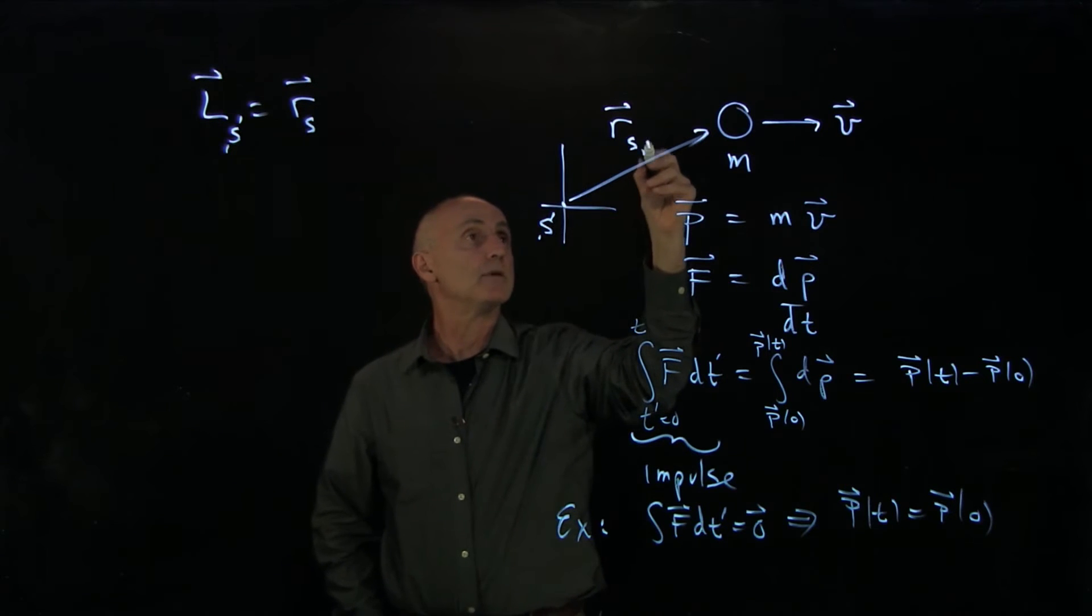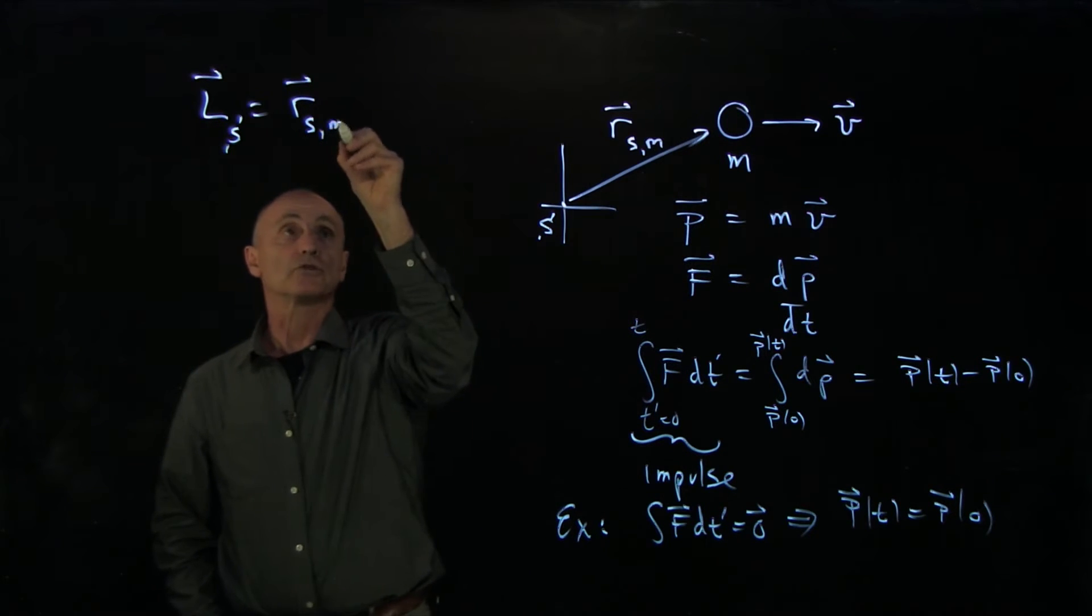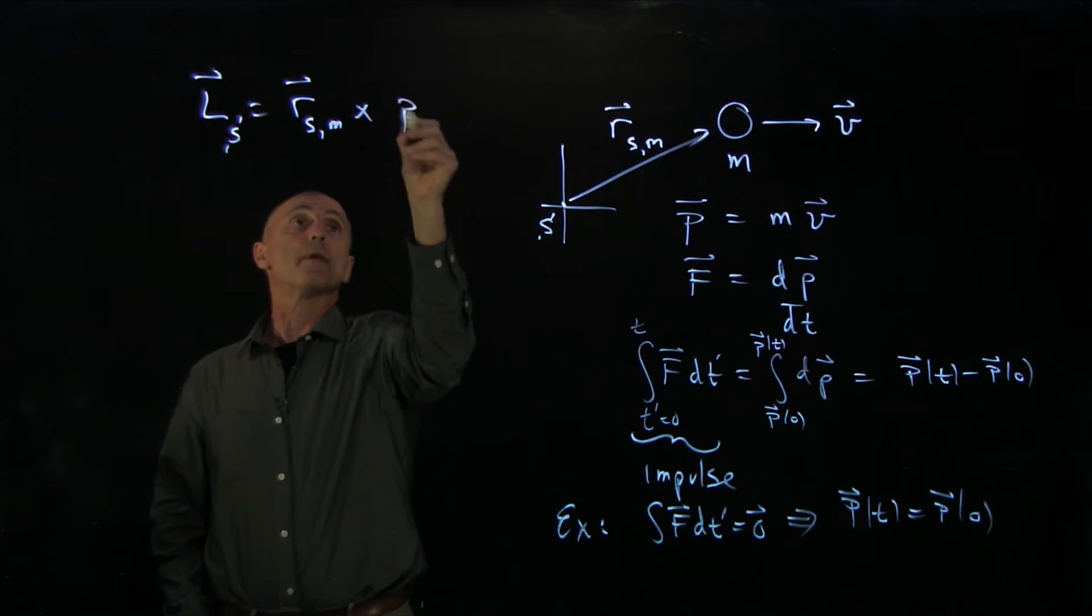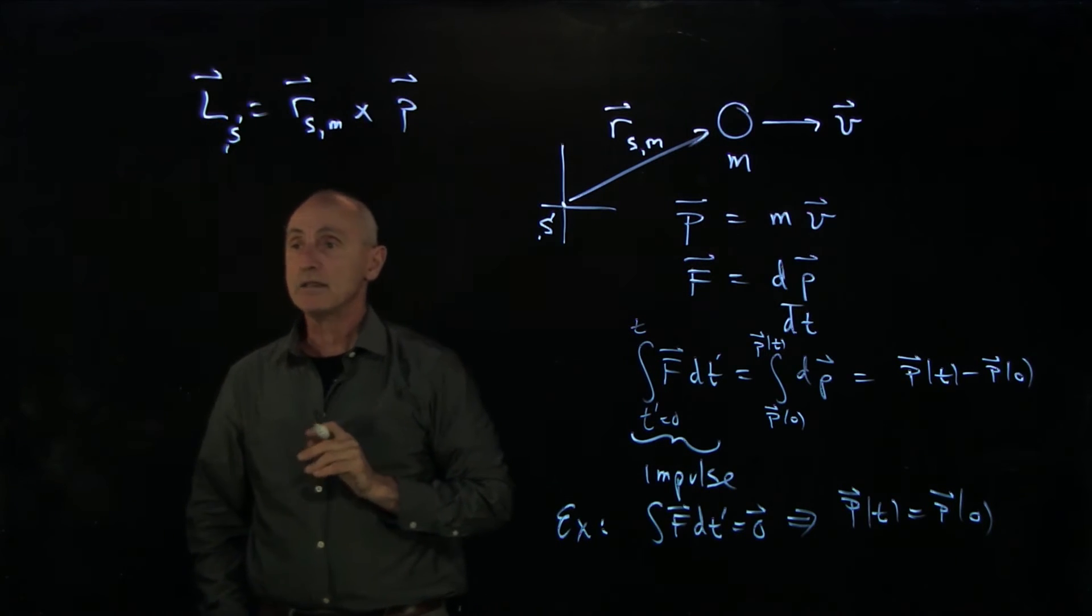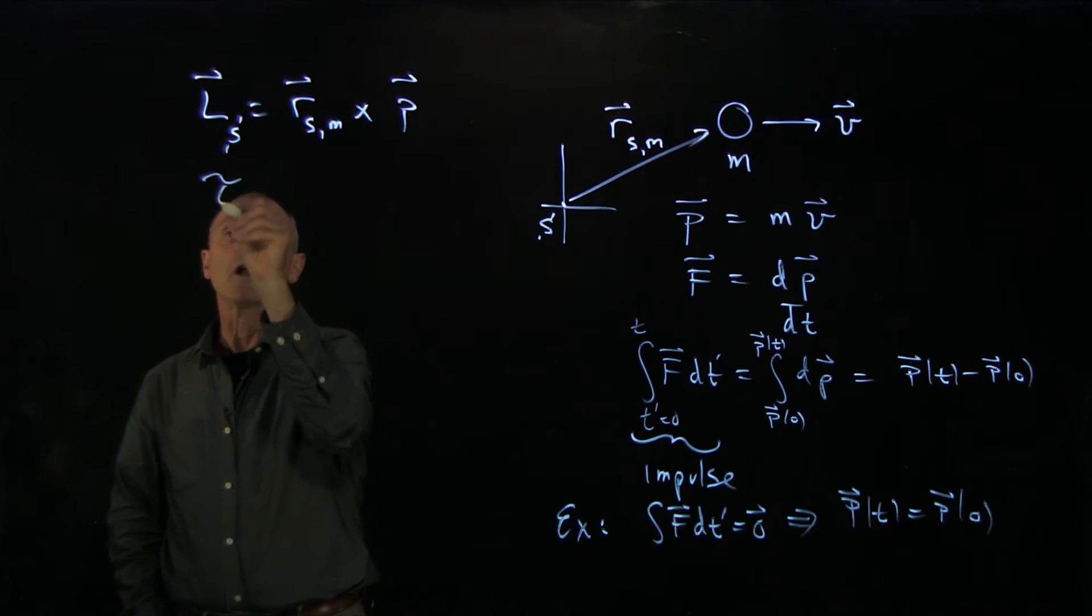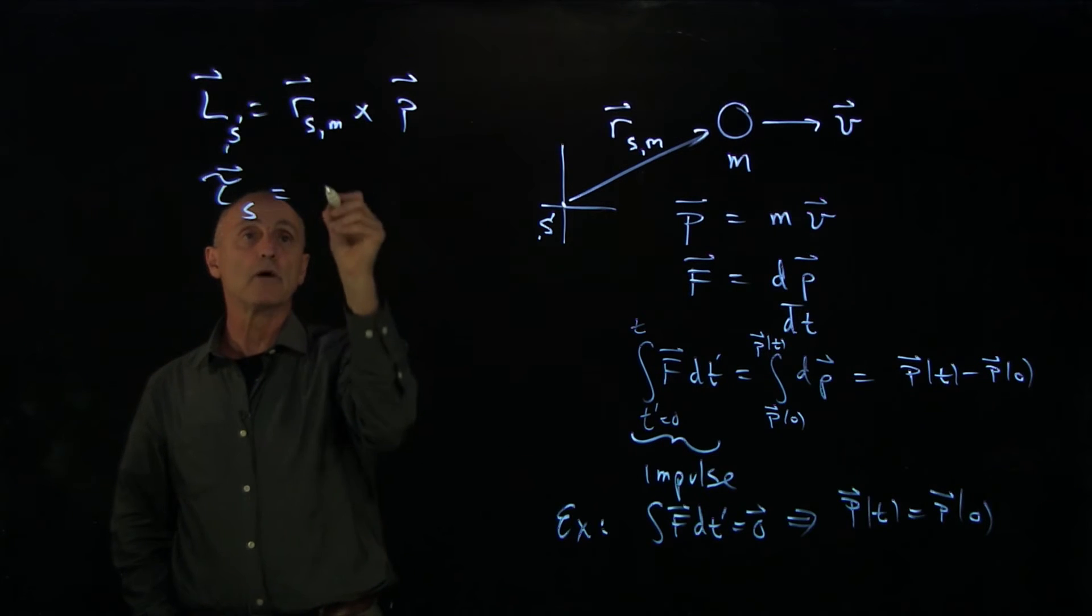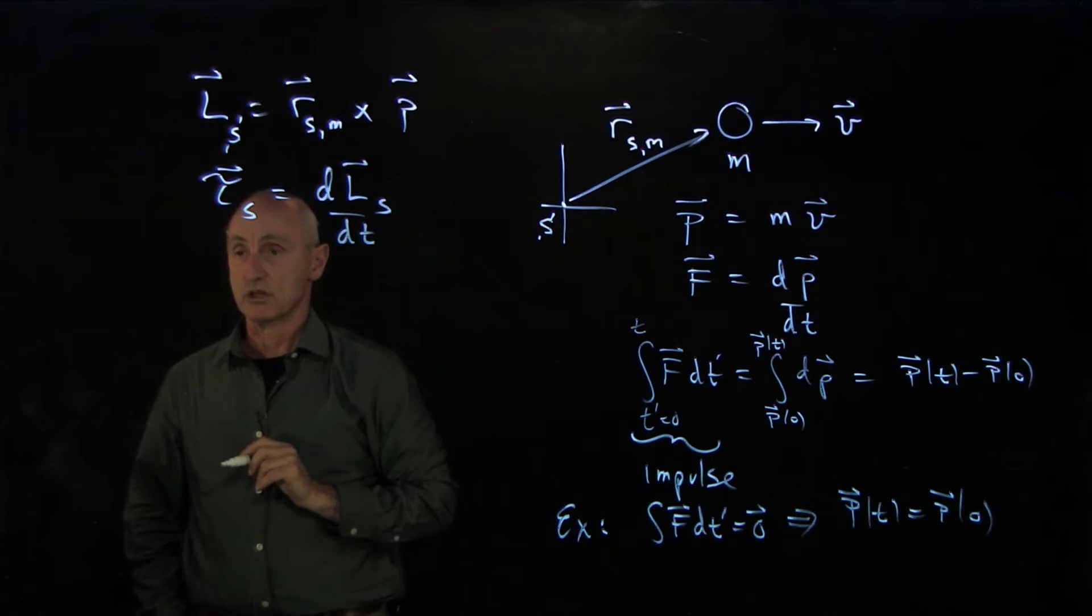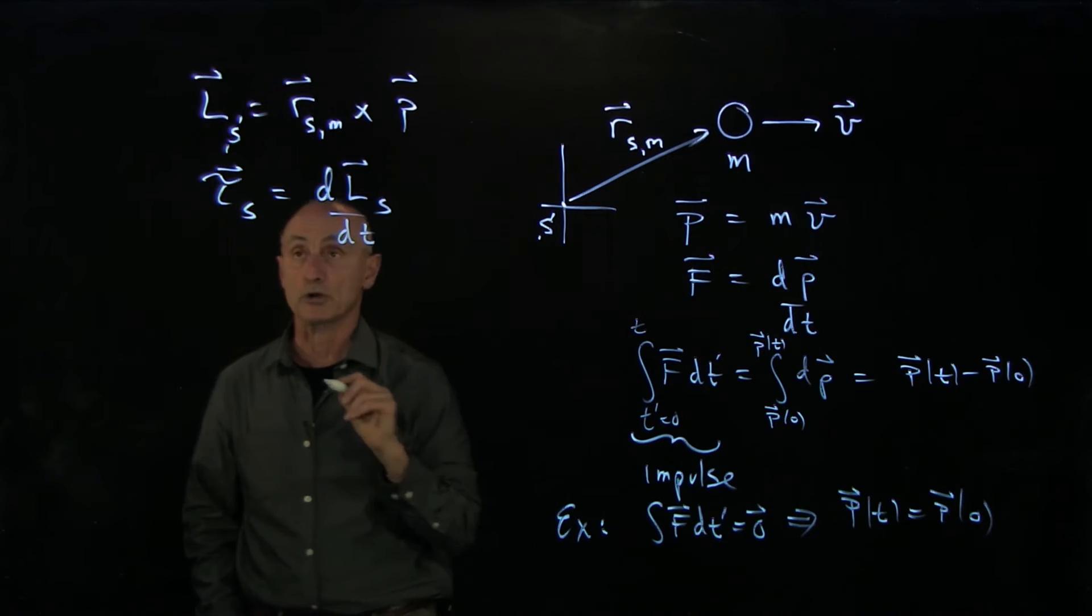We can indicate to the mass m. It's a vector from s to where the object is located, crossed with the momentum of the object. This is how we define angular momentum. Recall that our basic concept is that the torque about s causes the angular momentum about s to change for this single particle.